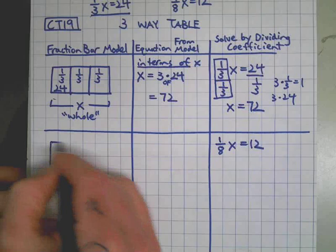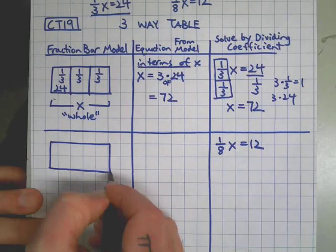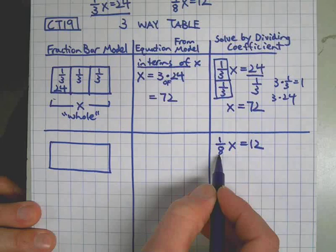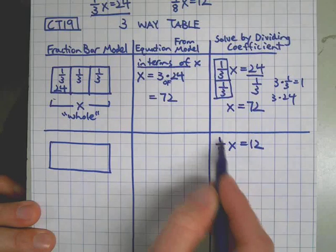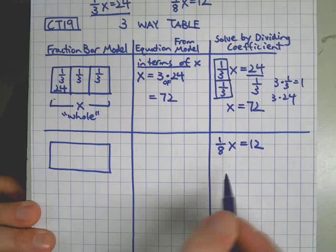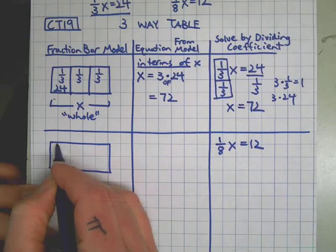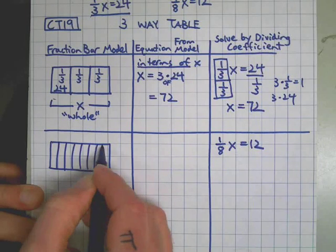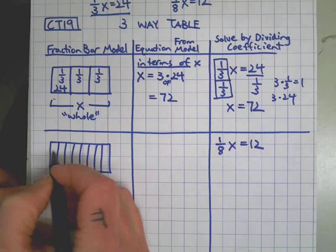First, I draw the rectangle. I'm going to split it into eight pieces. Why? Because the coefficient here tells me to do that. The denominator is eight. I know there's eight pieces here. Seven lines: one, two, three, four, five, six, seven. Now I should have eight pieces.